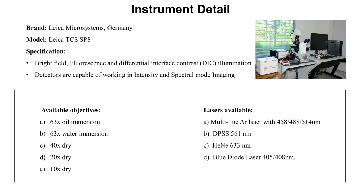The confocal microscope at CSR NIST is from Leica Microsystems, Germany. The model number is DCS SP8. It has many specifications including bright fluorescence and differential interference contrast (DIC) illumination, with a confocal scan head attachment. Detectors are capable of working in intensity and spectral mode imaging, and it is capable of simultaneous detection and separation of a minimum of 5 fluorophores. Five different types of objectives are available, including dry, oil immersion, and water immersion.